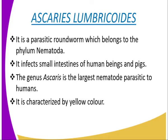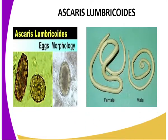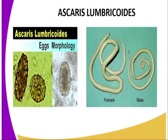We are going to have the first parasitic worm as Ascaris lumbricoides, whereby Ascaris lumbricoides is a parasitic worm which belongs to the phylum Nematoda. Ascaris lumbricoides is widespread in distribution and infects the small intestines of pigs and human beings. It may also occur in other organs of the body. We can have a diagrammatic presentation of Ascaris lumbricoides.